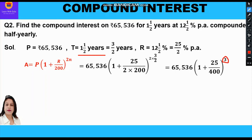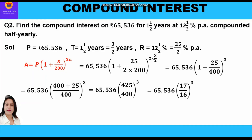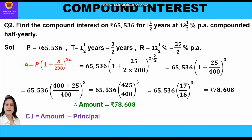Taking LCM: A = 65,536 × (425/400)³ = 65,536 × (17/16)³ = Rs 78,608. Now compound interest is the difference between amount and principal: CI = 78,608 − 65,536 = Rs 13,072. This is how we solve questions when the interest is compounded half yearly.